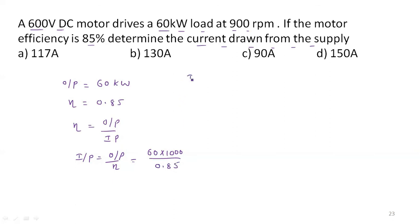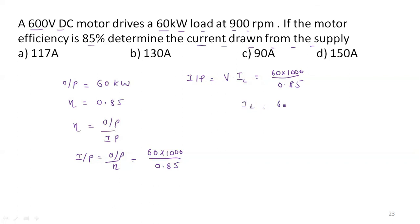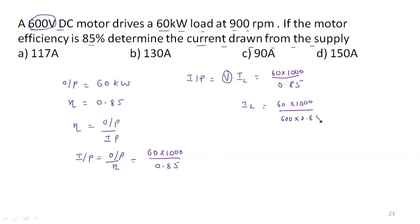Input equals output divided by efficiency. Output is 60 kilowatts, efficiency is 0.85. Input power equals V times I. So current equals 60,000 divided by (0.85 times 600). Solving, the final value is 117.6 amperes. So option A is the correct option.